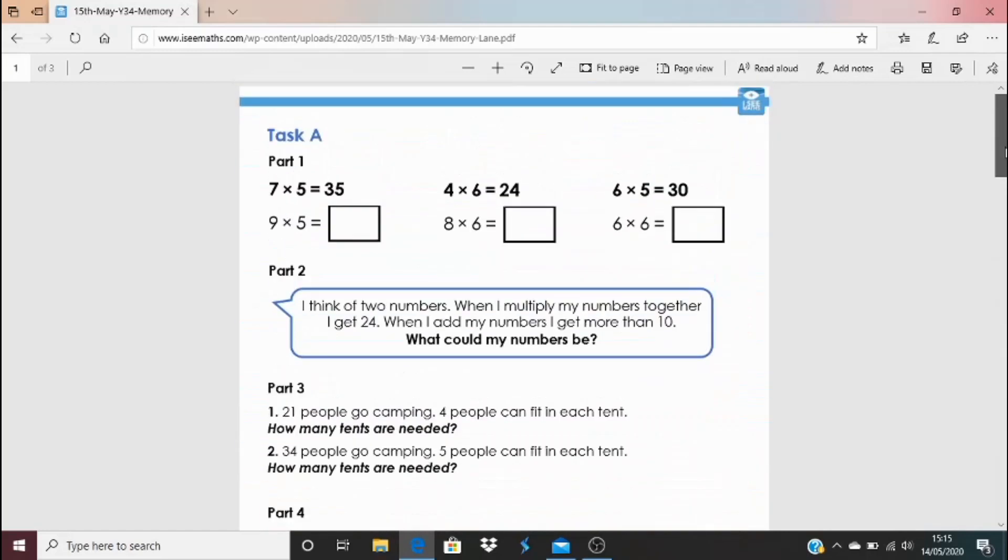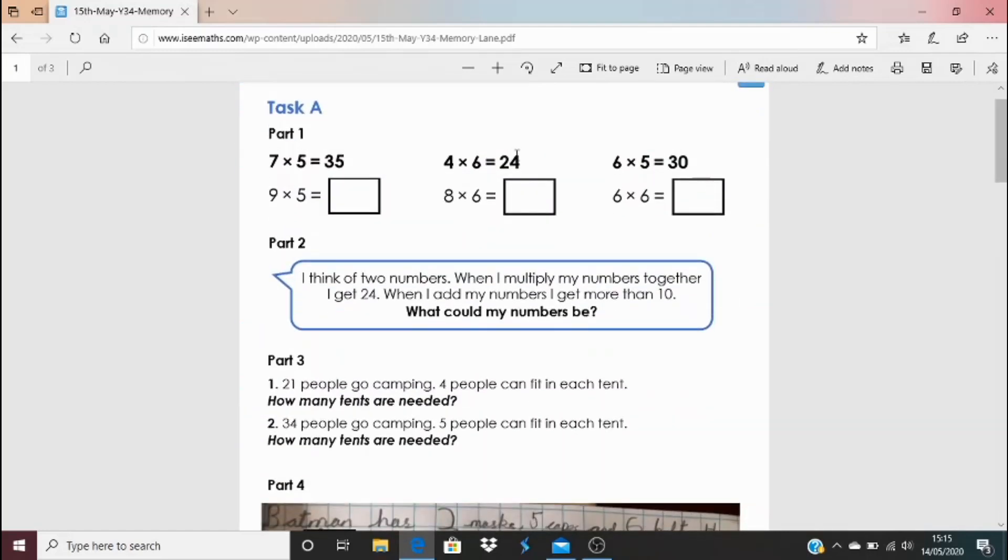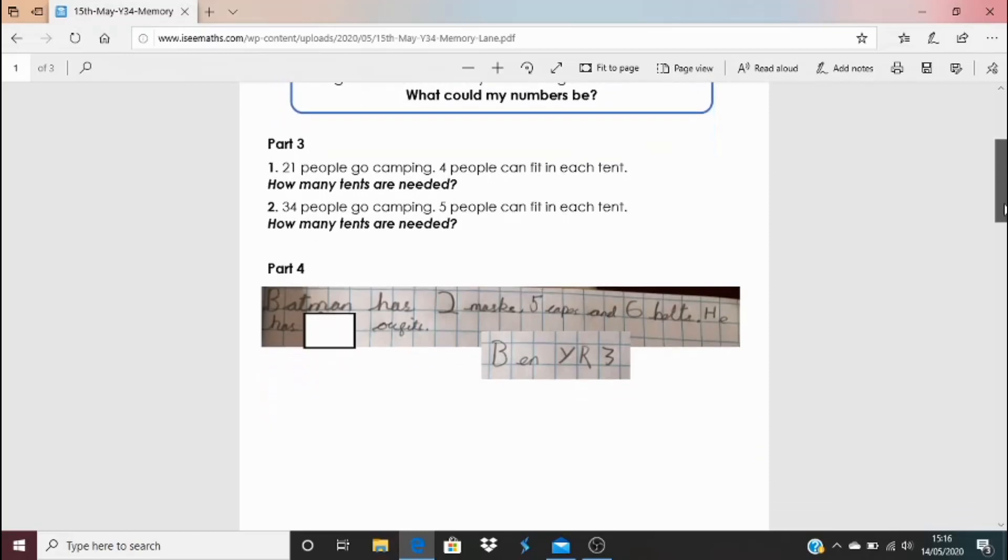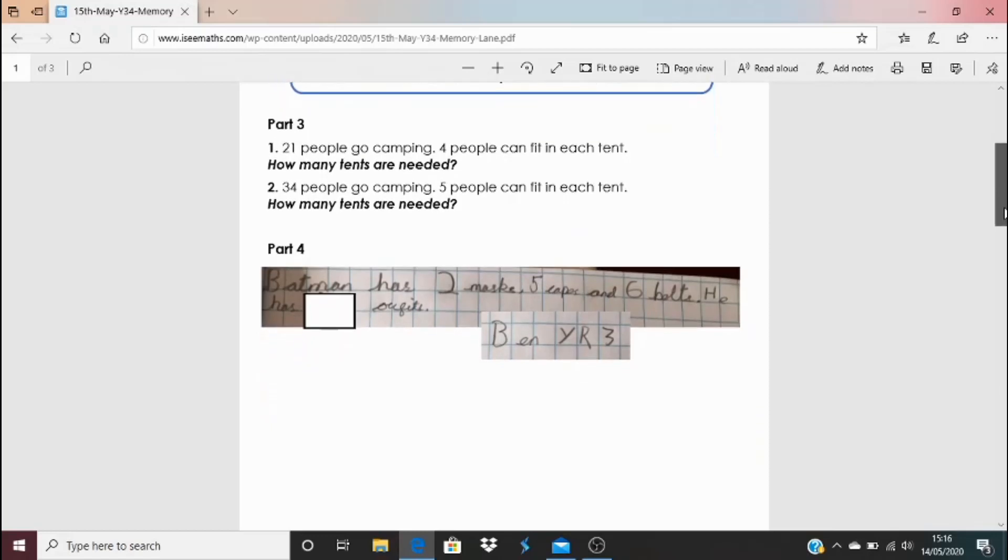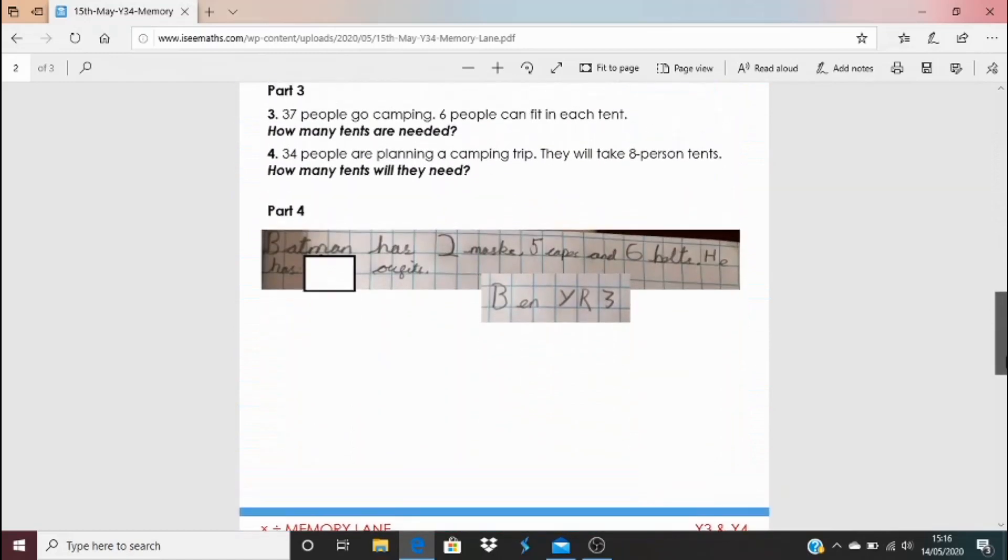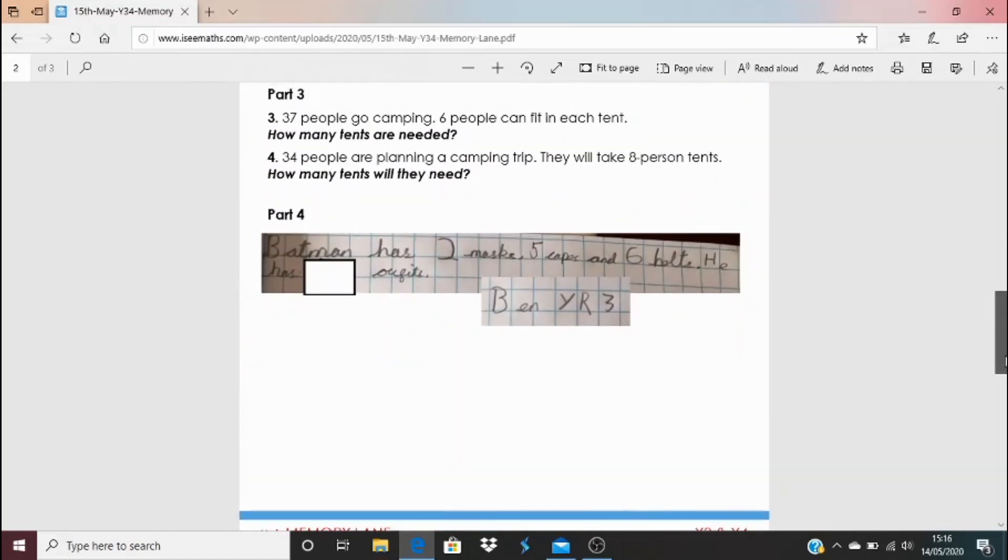Let's have a look through task A. Part one is one of the 'I know so' style questions: how can you use this fact to work out the one below? Then we look at the sum and product of two numbers. What could the different possible answers be? We think about how many tenths are needed, and then we go to one of Ben's questions. Very similar format for task B, just the level and challenge of the calculation is a bit different.